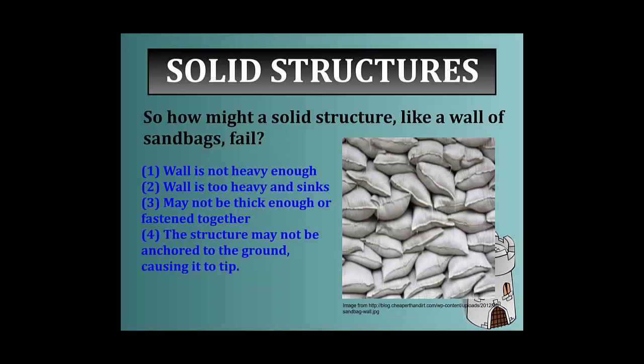When we build solid structures like walls, how do they fail? First, a wall can be not heavy enough — whatever it's supporting on one side can essentially just push it over. It can also be too heavy and actually sink in different parts; we see that sometimes with garden walls, where there's unevenness along the top over time. The ground could be unstable and the wall too heavy. The wall may not be thick enough or fastened together properly, allowing whatever is pushing on one side to cause collapse. And the structure may not be anchored to the ground, causing it to tip — like a really high wall built out of snow that gets wobbly at the top.